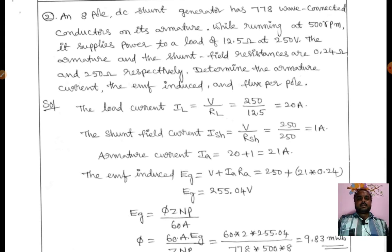Next problem: An 8-pole DC shunt motor has 778 wave-connected conductors on its armature. While running at 500 rpm, it supplies power to a load of 12.5 ohms at 250 volts. The armature and shunt field resistances are 0.024 ohms and 250 ohms respectively. Determine the armature current, the EMF induced, and flux per pole.